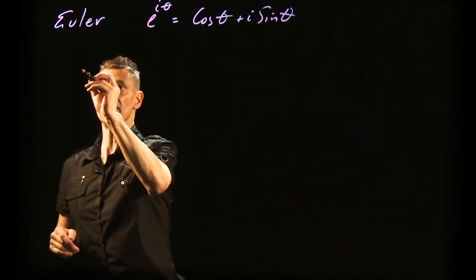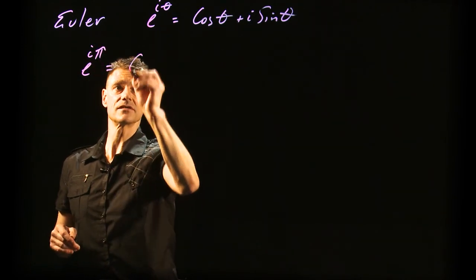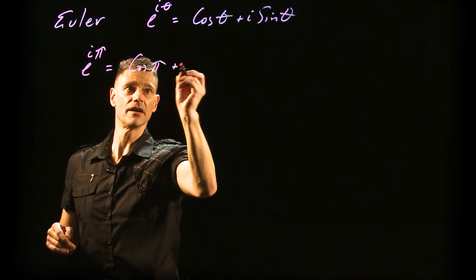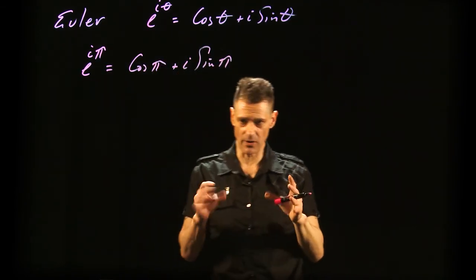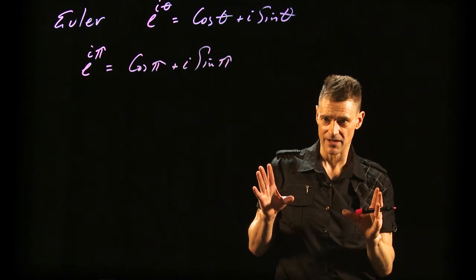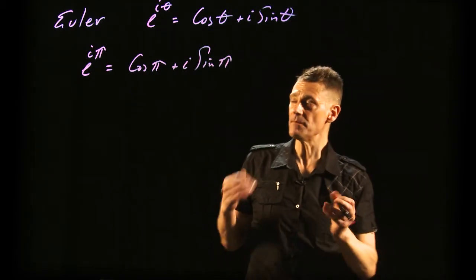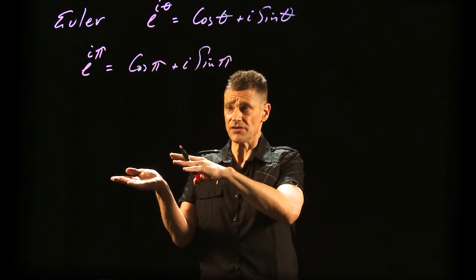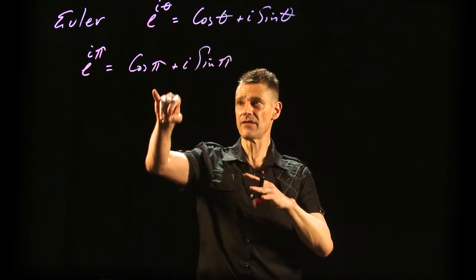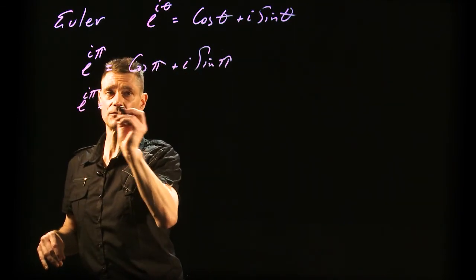What is e^(iπ)? This is cos(π) + i·sin(π). This is why you want to have a feel for the first quadrant and the axes. If you move anything around, you can see how it should go. This is going to be -1, and this will be zero. So e^(iπ) = -1.